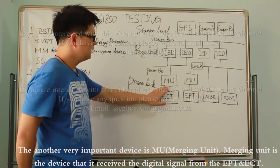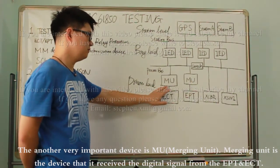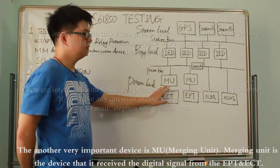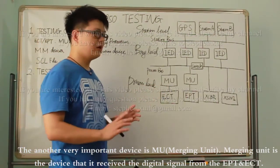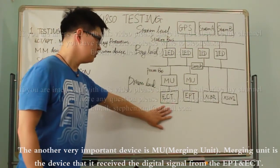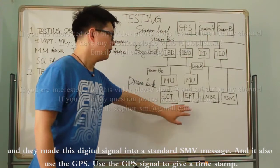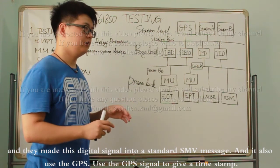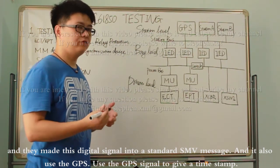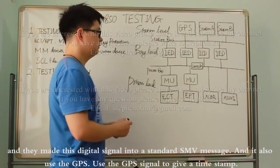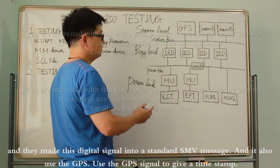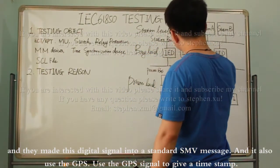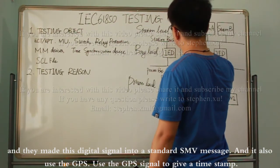Another very important device is the MU — the merging unit. The merging unit receives the digital signal from the ECT and EPT, converts it into a standard SMV message, and also uses the GPS signal to add a timestamp to each SMV message.